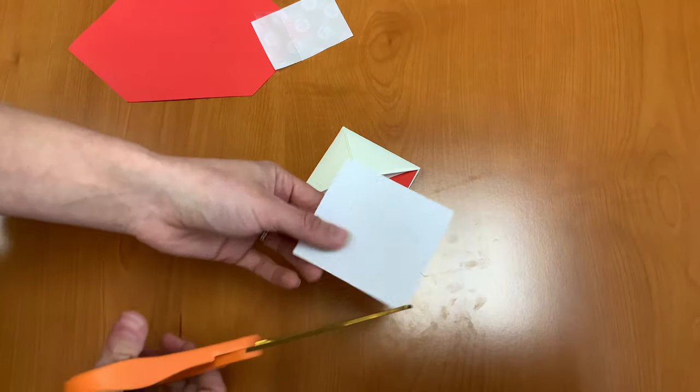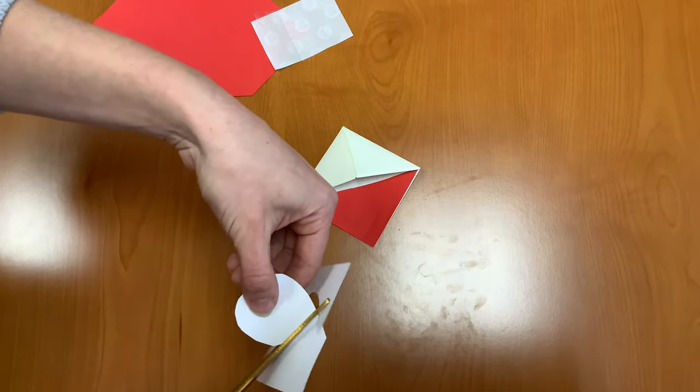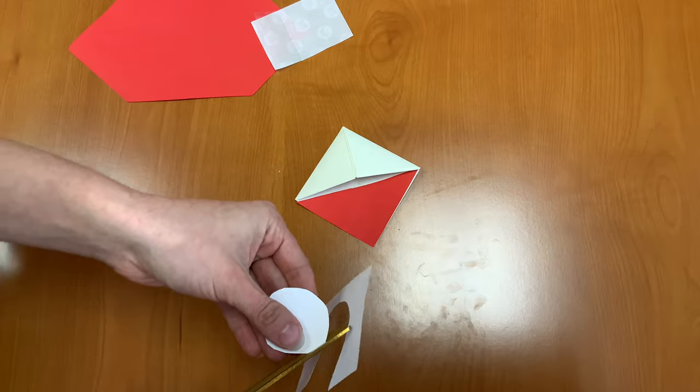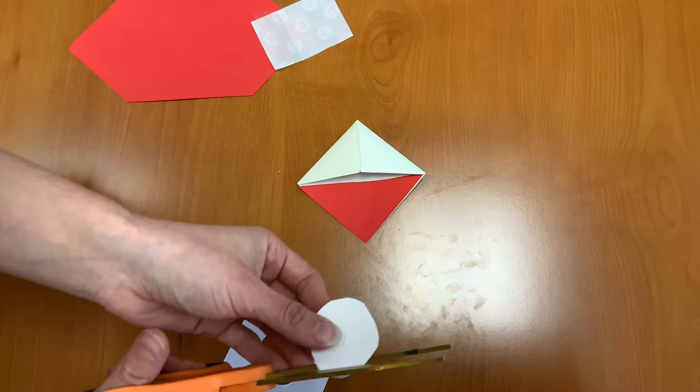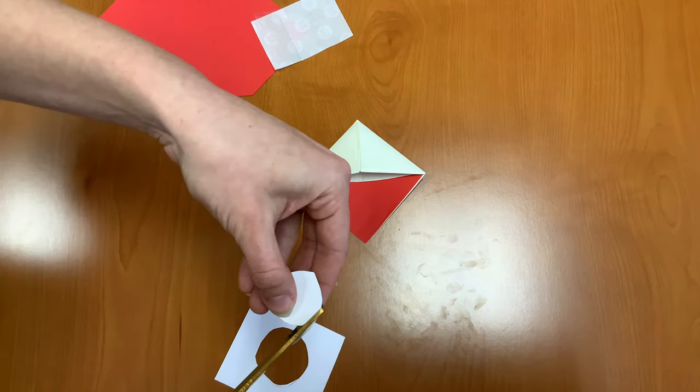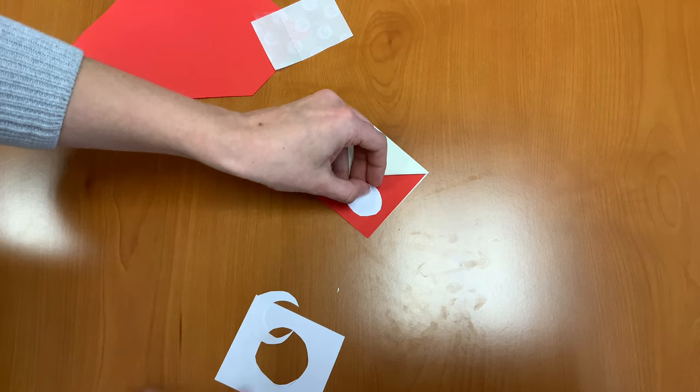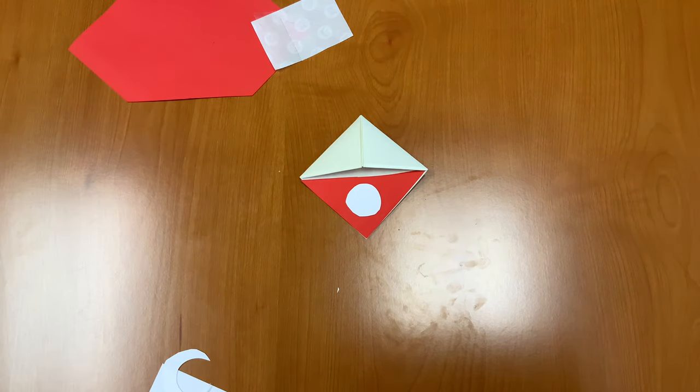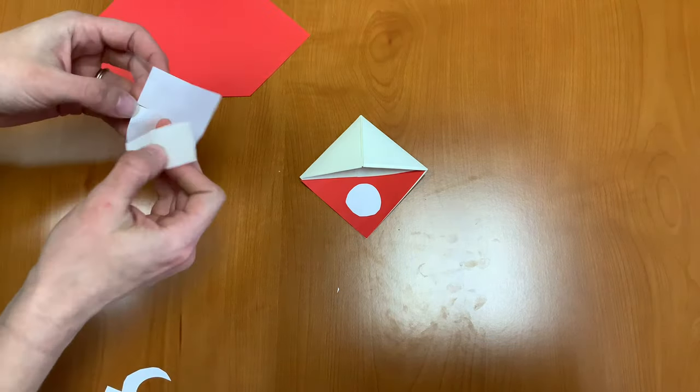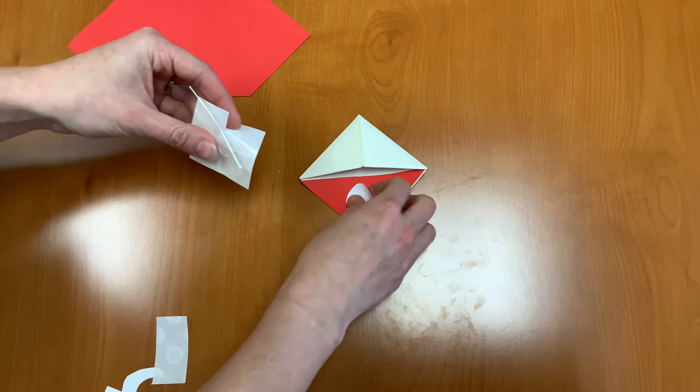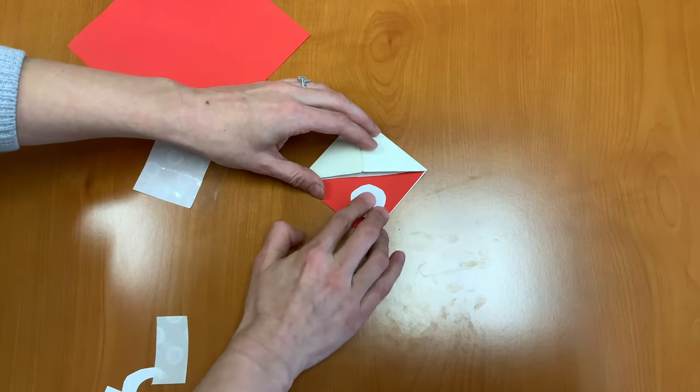Next, you want to cut a circle out from your white piece of paper, and it doesn't have to be perfect. In fact, Dr. Seuss doesn't use perfect circles, so you can make yours as lopsided as you want. And I actually need to make mine a little bit smaller. There we go. You're going to attach your circle with another glue dot to the red part of your bookmark body.